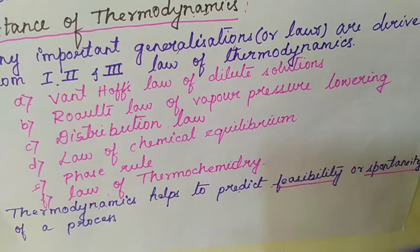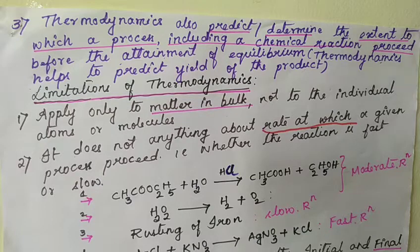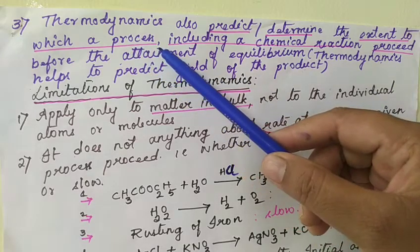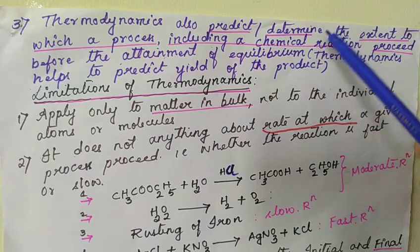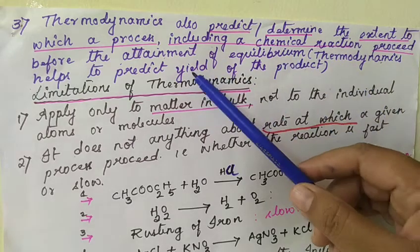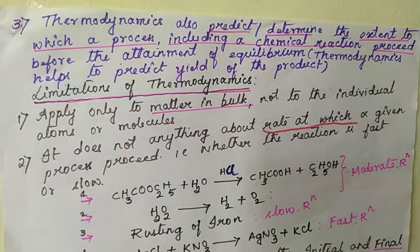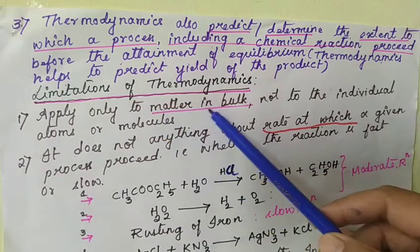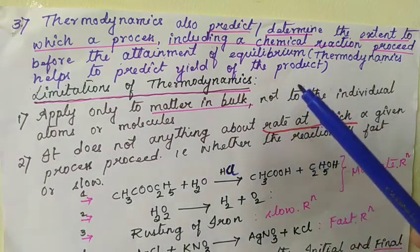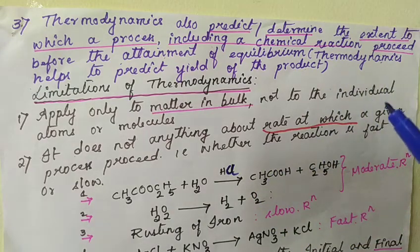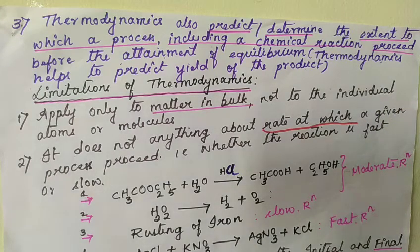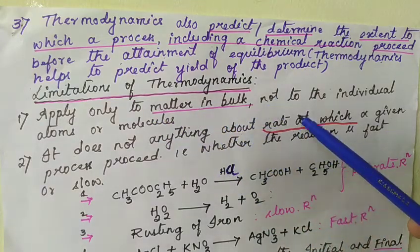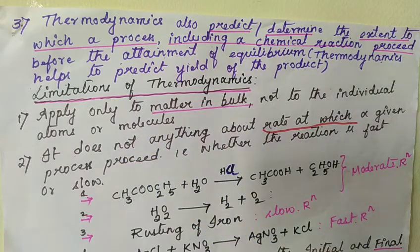The third important application of thermodynamics is that we can predict the extent to which a chemical or physical process can take place — meaning we can predict the yield of the product using thermodynamics. As for limitations: thermodynamics applies only to matter in bulk. It does not deal with individual atoms or molecules but with groups — the assembly or assemblage of molecules. That is why we say thermodynamics applies only to matter in bulk, not to individual atoms or molecules.